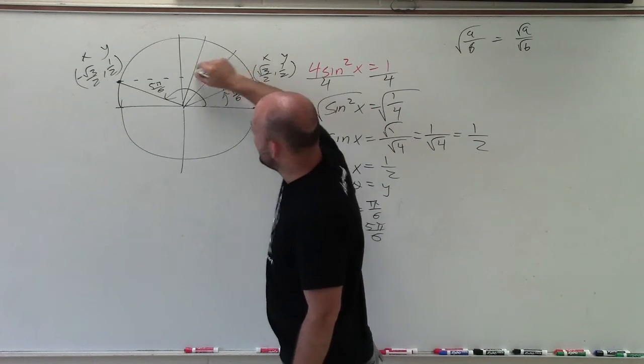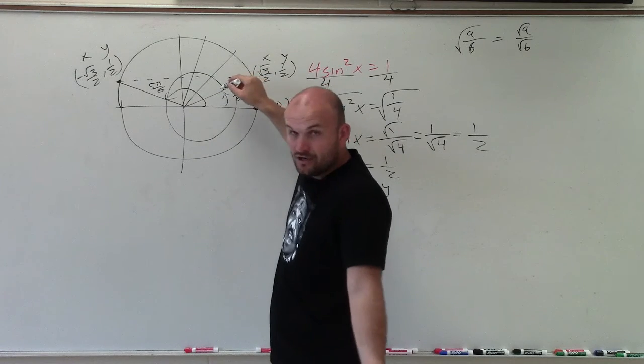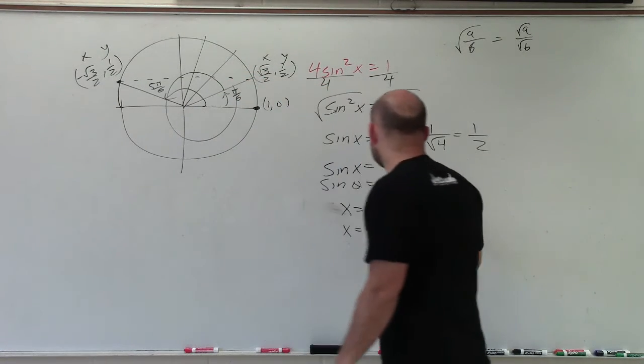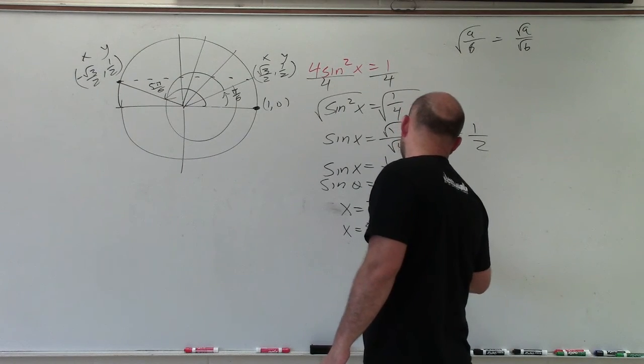So if you're at pi over 6, if I add 2 pi over here, I'm going to get back to that same angle, right? And so it's going to be another solution. So all I need to do is just add 2 pi n plus 2 pi n.